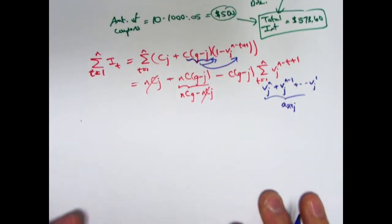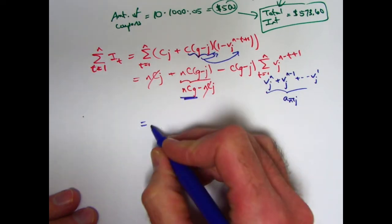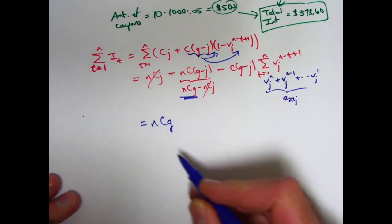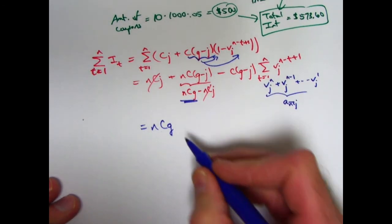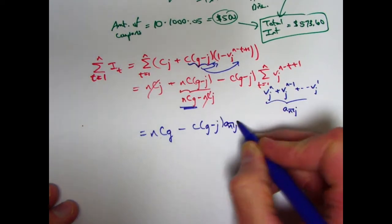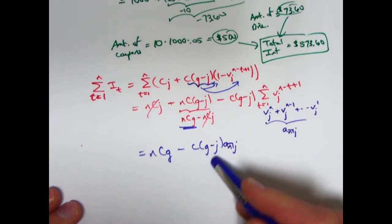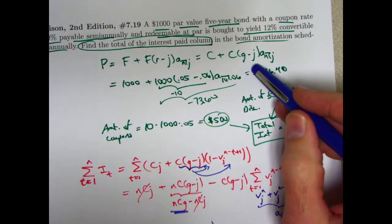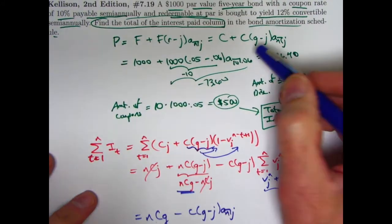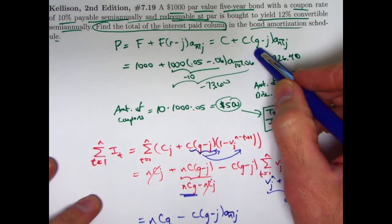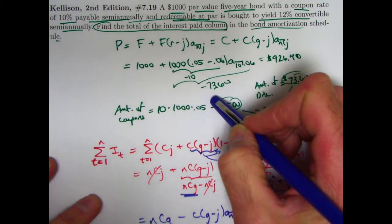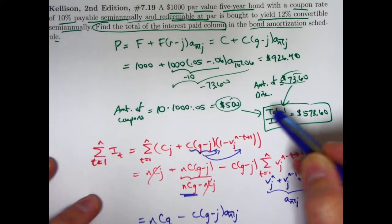And you can simplify your final formula then to being this, N, C, G, which would be the total of all the coupons, right? F times R equals C times G. Those are the coupon amounts and I've got N of them. And then I have a minus C times G minus J, A_N, J. This is looking kind of familiar. This is, that part is looking similar to what you see up here, except there's a plus sign there and there's a minus sign down there. Is this correct? Remember back up here when you buy the bond at a discount, G is less than J. So we get a negative quantity here. We're adding a negative quantity so that the price was less than the thousand dollars here.